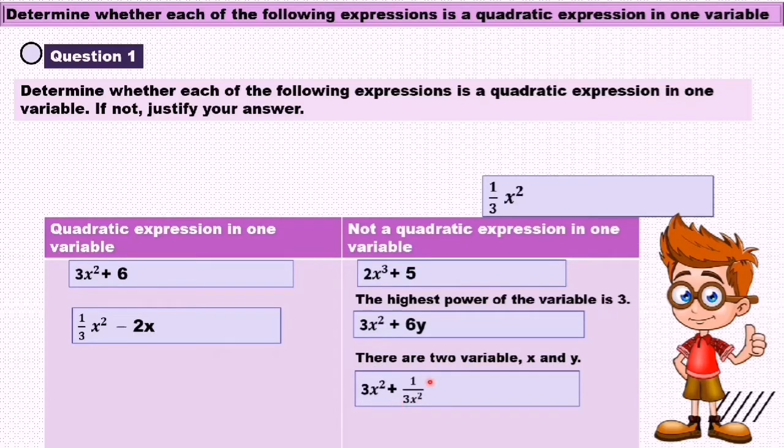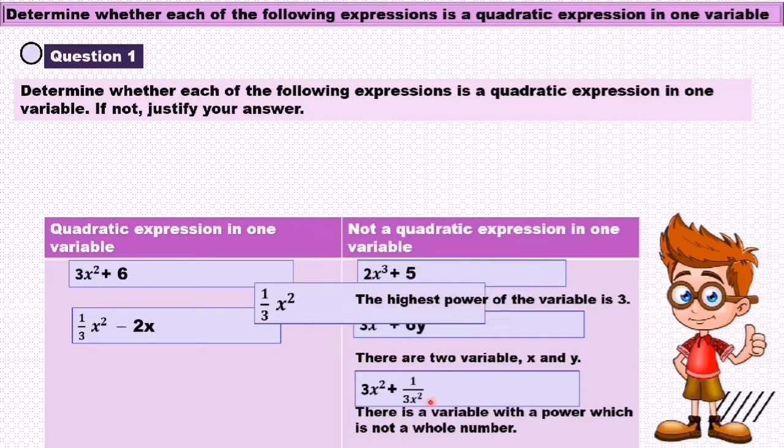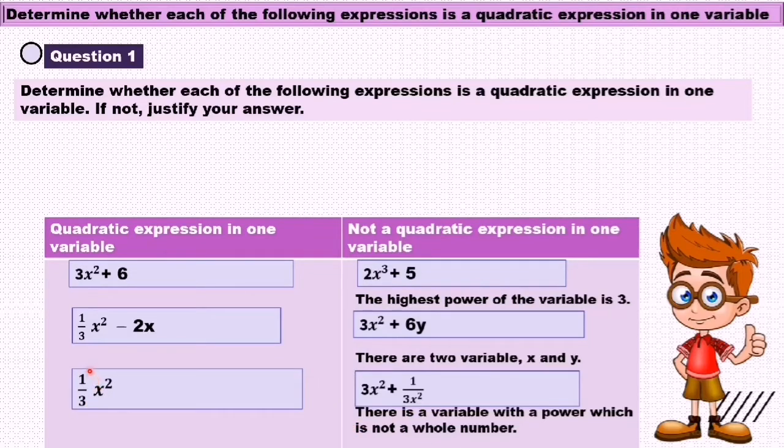Whereas 3s² + 1/(3s²) is not a quadratic expression in one variable because there is a variable with a power which is not a whole number. If I bring this s² up here it will become s power of negative 2. So the power is negative, not a whole number. 1/3 s² is a quadratic expression in one variable.